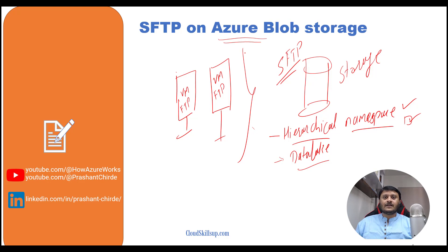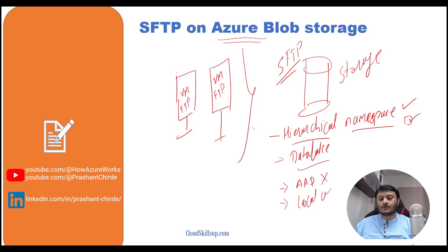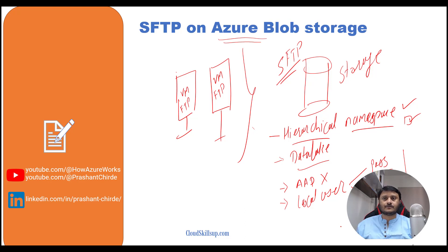Regarding authentication and authorization: Azure SFTP does not support Azure Active Directory. It supports a new authentication method called local users. For local users, you have two options: password-based and SSH key-based authentication, and it supports both simultaneously. You don't need to choose just one. It supports up to 1,000 local users for your SFTP, so you can manage users locally.